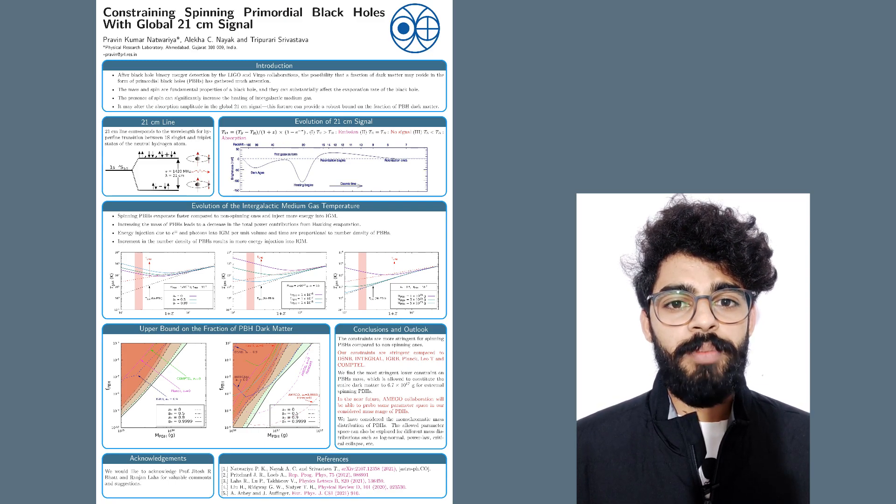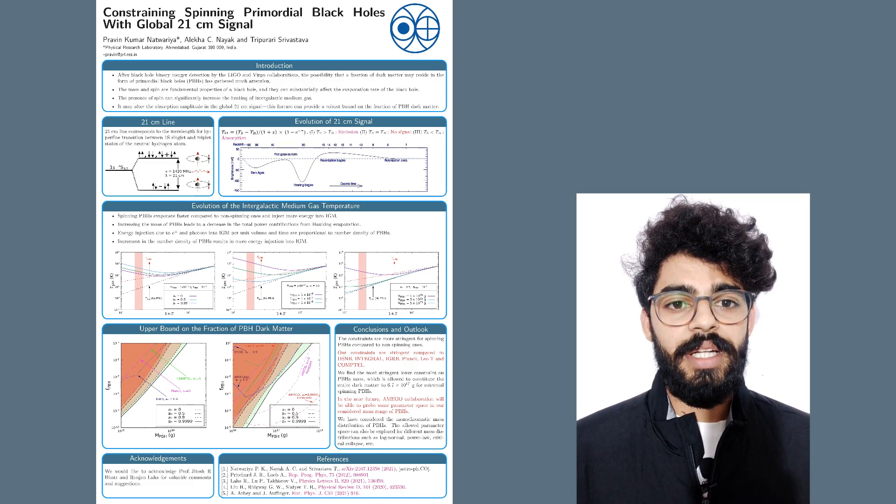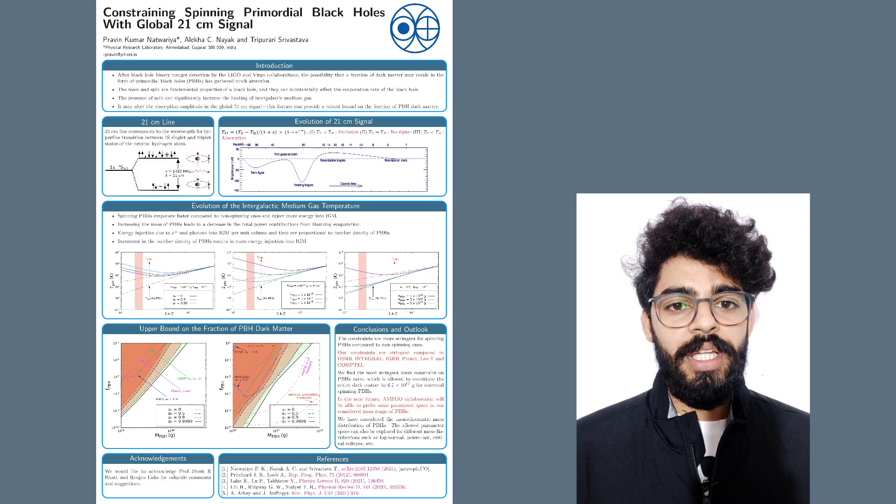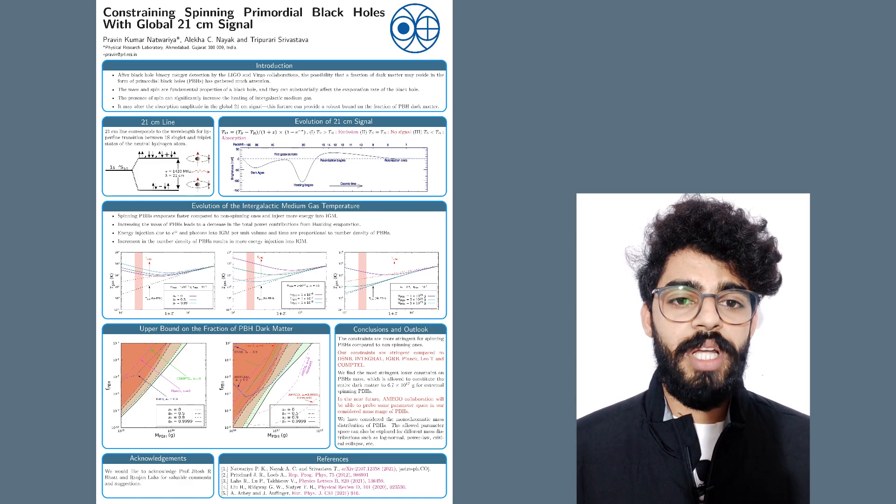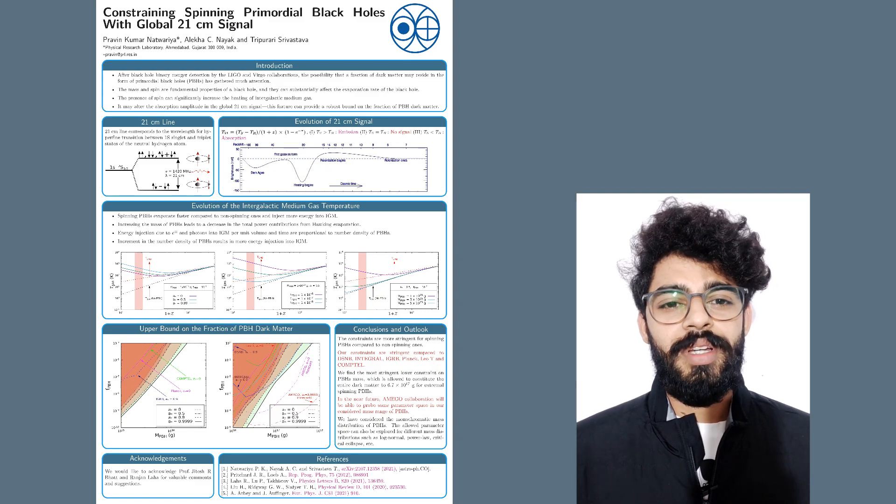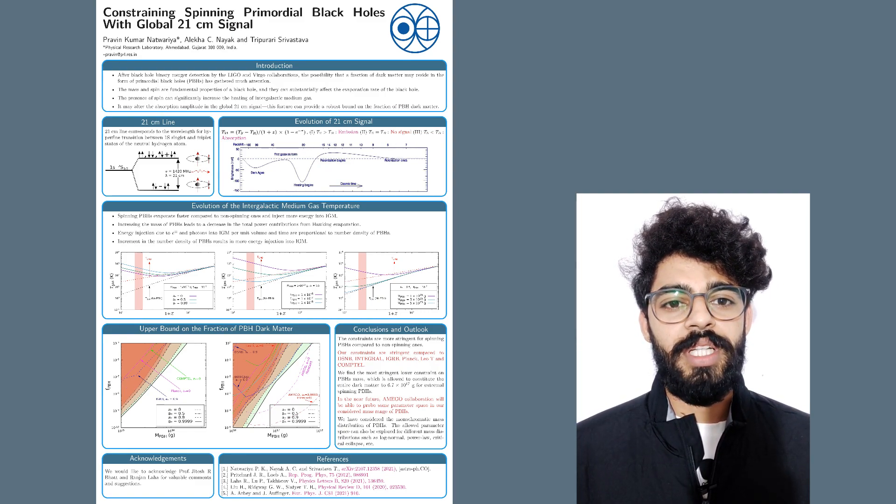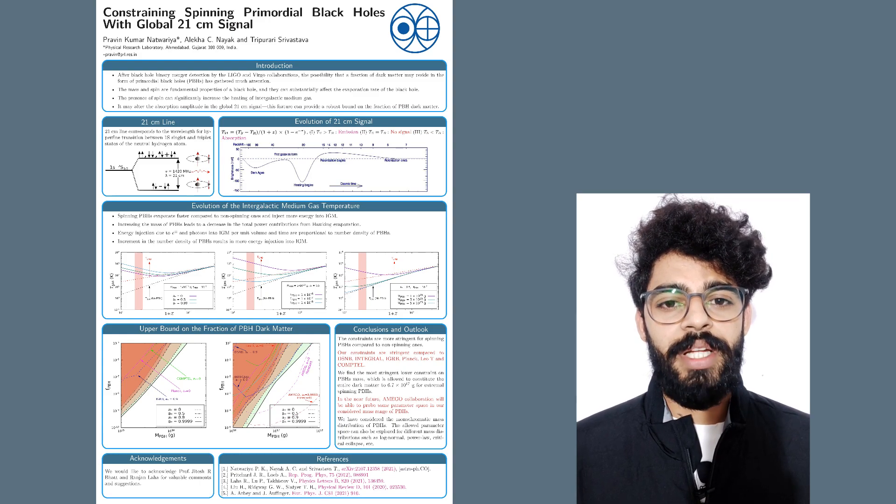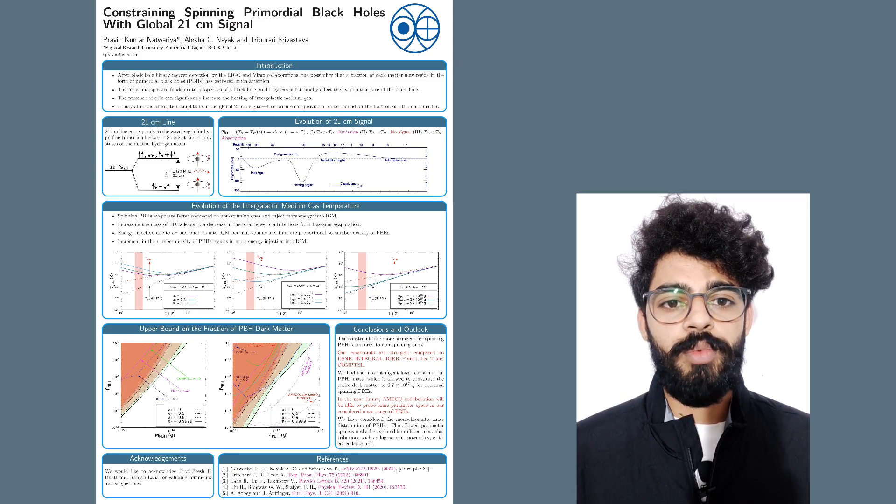The evaporating black hole can inject energy into the intergalactic medium and heat the gas. Subsequently, it can modify the absorption amplitude in the global 21 cm signal. Therefore, the absorption feature in the global 21 cm signal can provide a robust bound on the primordial black holes.